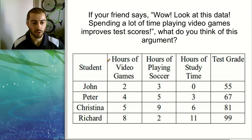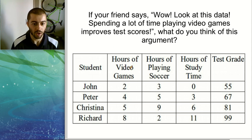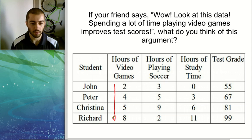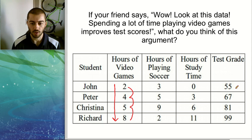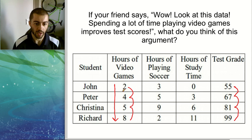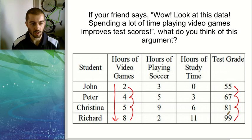When we look at this, there's a problem. The amount of video games played went up as we go from top to bottom on this table — from 2 to 4 to 5 to 8 — and the test scores went up as well, from 55 to 67 to 81 to 99. So as the number of video game hours increased, the test scores increased.